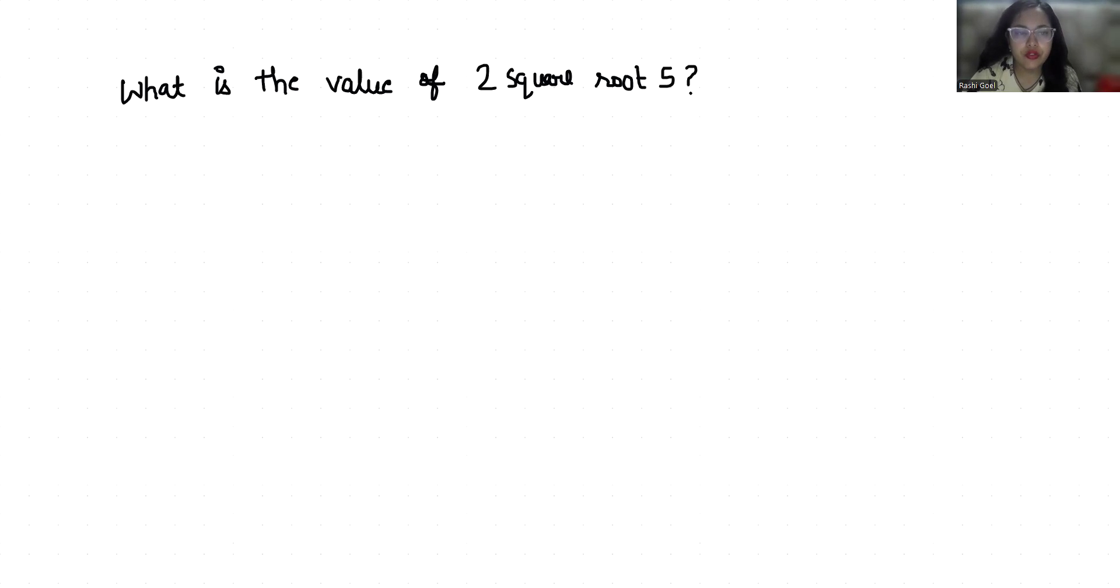So 2 square root 5 is an irrational number which means it cannot be expressed as a finite decimal or fraction. So we can approximate its value.